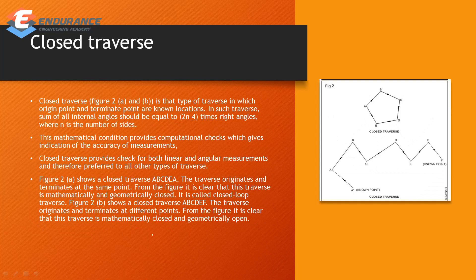The next type is closed traverse. In open traverse, the survey starts and ends at different points. In closed traverse, we look at where the survey starts and ends — the origin and the final point are both known. Closed traverse is that type of traverse in which the origin point and terminate point are both known locations.